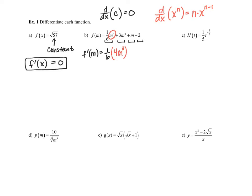The second term is three m squared. We have a three in front, which is a constant multiple, and we multiply that by the derivative of m to the second power using the power rule. The exponent two comes in front, then we subtract one from the exponent. Two minus one leaves a power of one, so that's really two m to the first power.